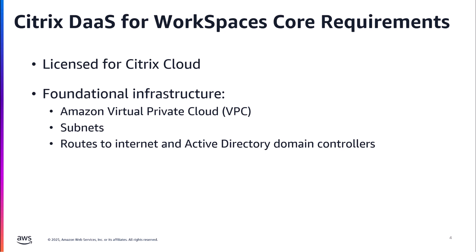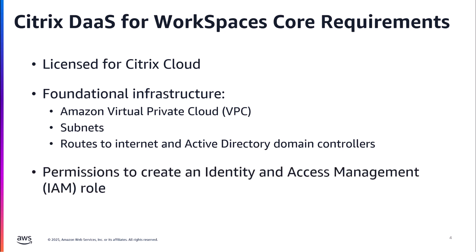This includes things like Amazon VPC with its subnets and routes and all the different bits and pieces typical for deploying machines on AWS. The key thing to note is you also need routes to the internet so these machines can talk to Citrix Cloud, as well as Active Directory, so that machines can register themselves within your Active Directory environment. Lastly, you'll need permissions within your AWS account to create IAM and access management roles that Citrix will assume in order to take actions on your behalf — spinning up and tearing down Workspaces and things of that nature.